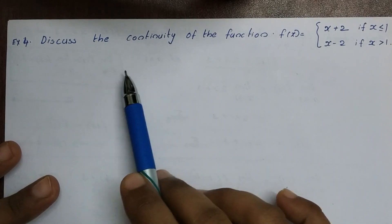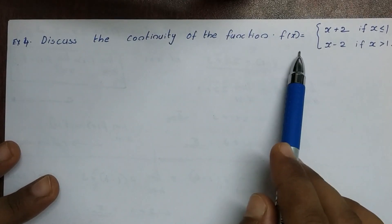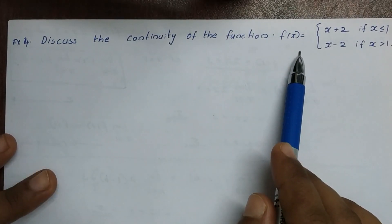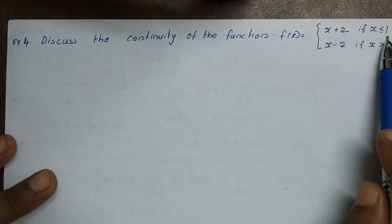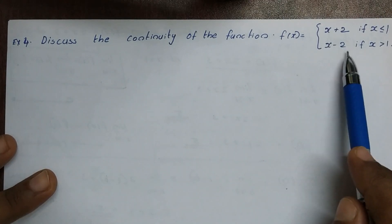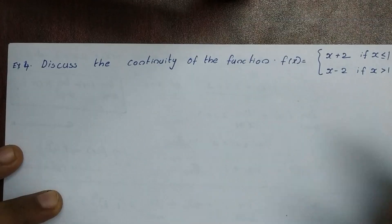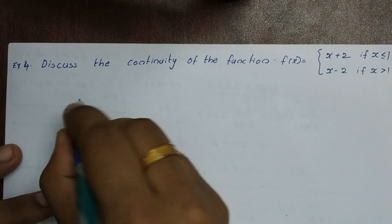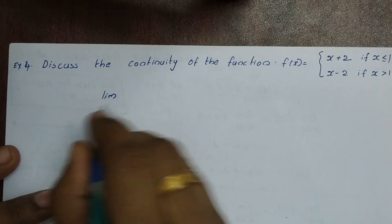Next question: discuss the continuity of the function f(x) = x+2 if x is less than or equal to 1, and x-2 if x is greater than 1. To check continuity, we check the equation and then the limit.